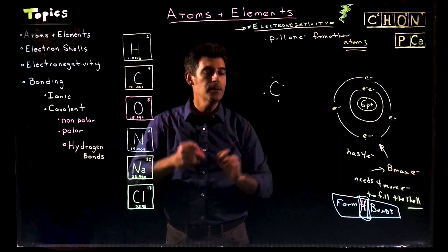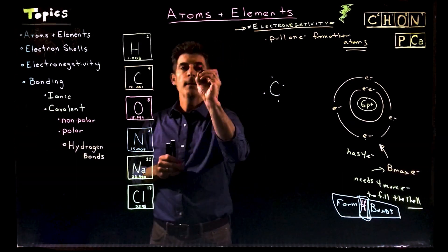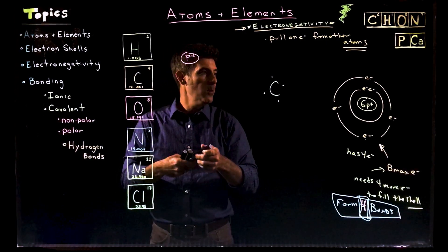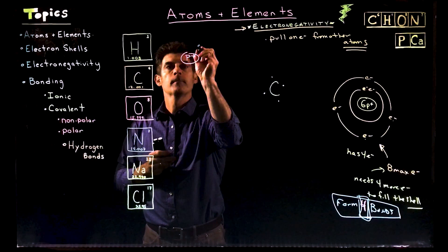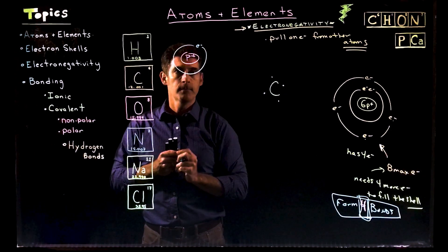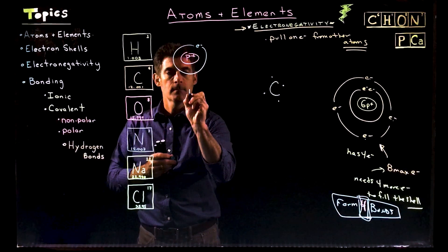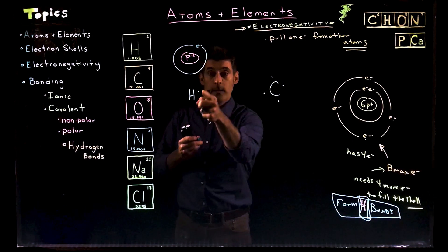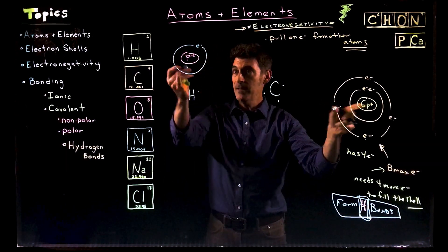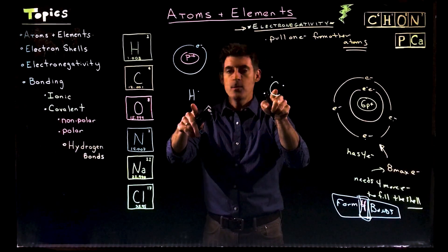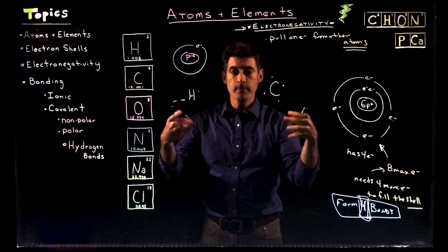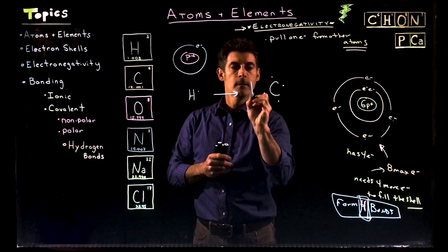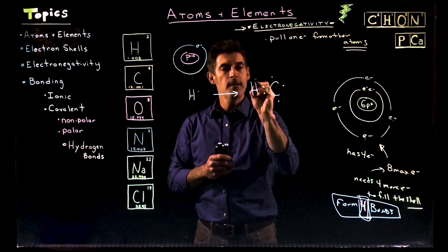So carbon needs four, it's going to form four bonds. We'll start off with hydrogen to add into it to keep it simple. So hydrogen, remember, had one proton. That was it. And then it has one electron. And that's hydrogen. So we could also do hydrogen as hydrogen, and then we'll just put the one dot because it has one electron. But it's the first shell, so it only needs one more.